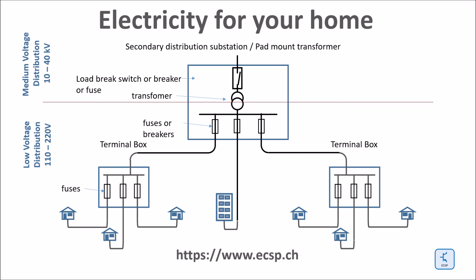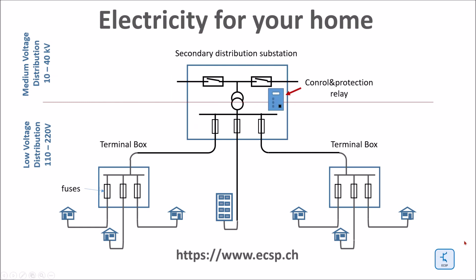In the US, a popular version of the secondary substation is the so-called pad-mount transformer. The secondary substation is equipped with a control and protection relay, and it can be connected to two medium-voltage cables for redundancy purposes.